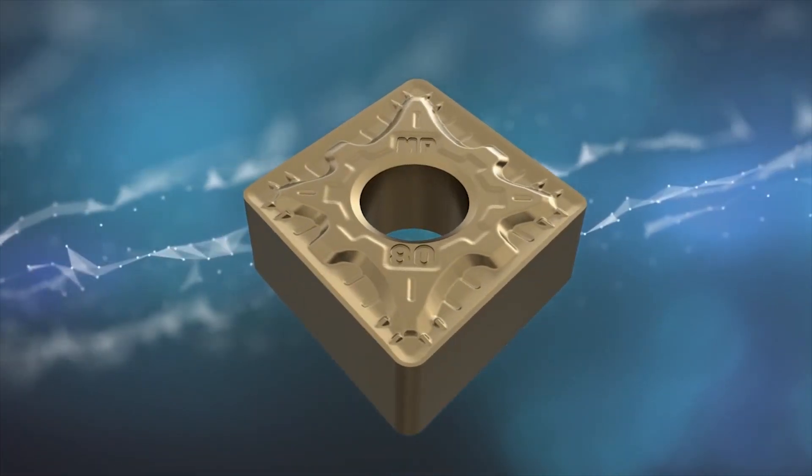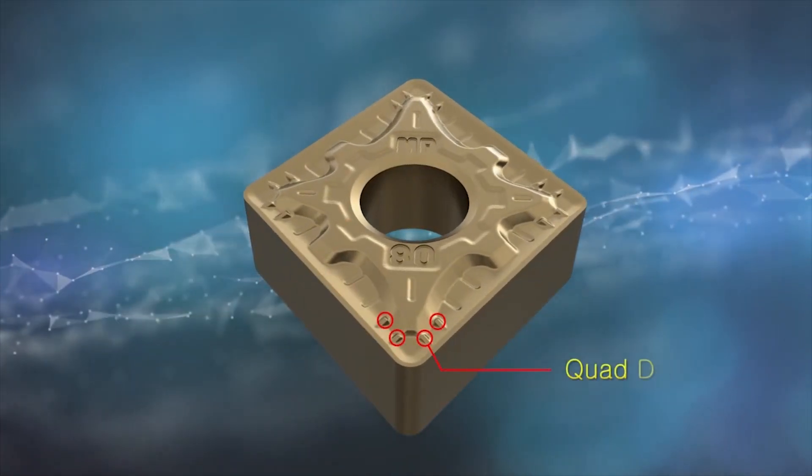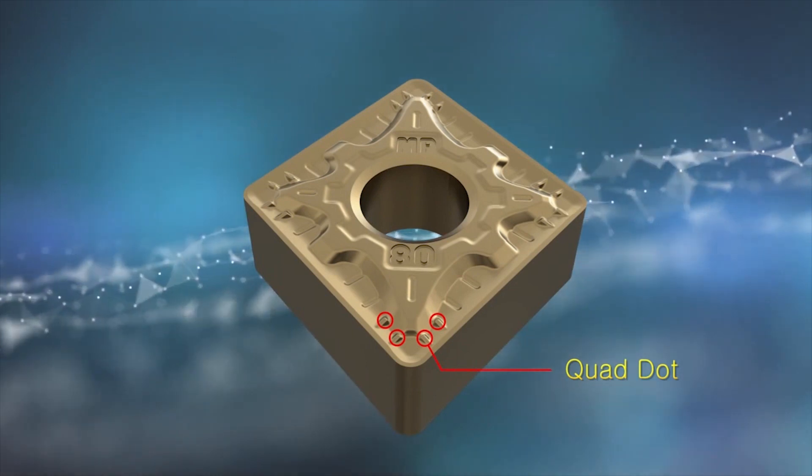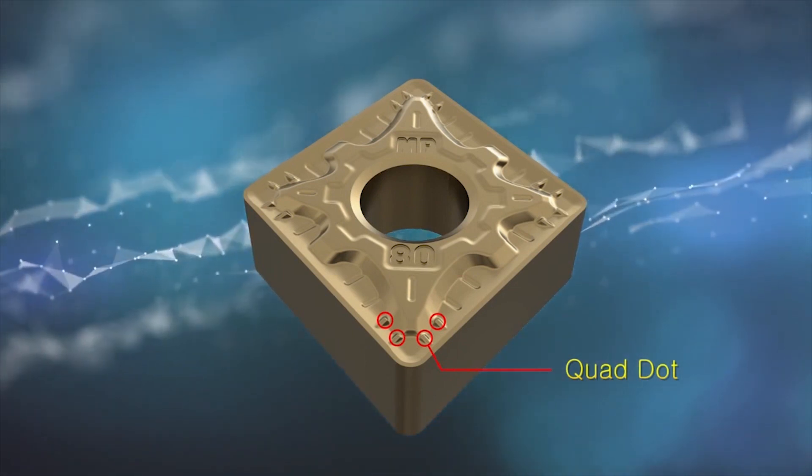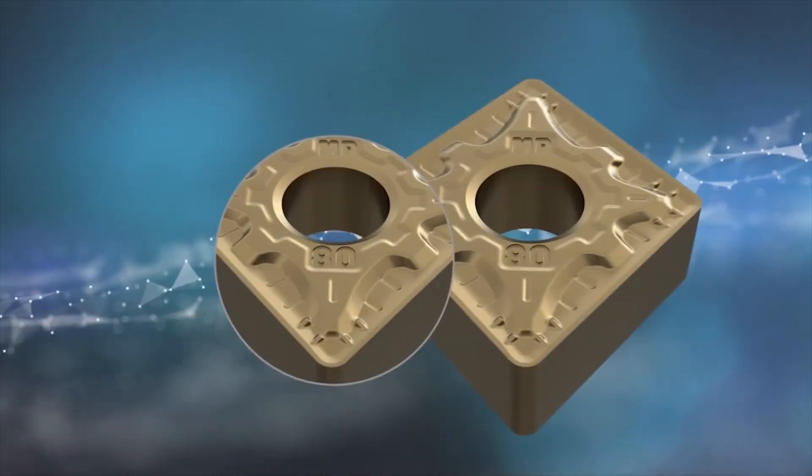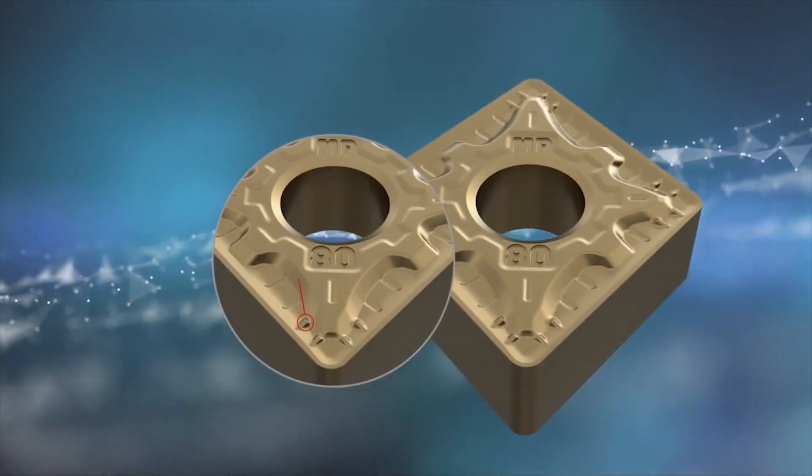The new MP chip breaker is for cutting medium alloy steel with Corloy QuadDot. It evacuates chips efficiently and the design of relief areas within the flat zone enables high-feed for improving productivity.